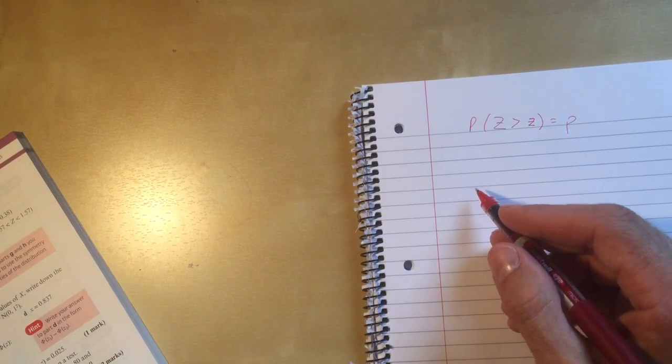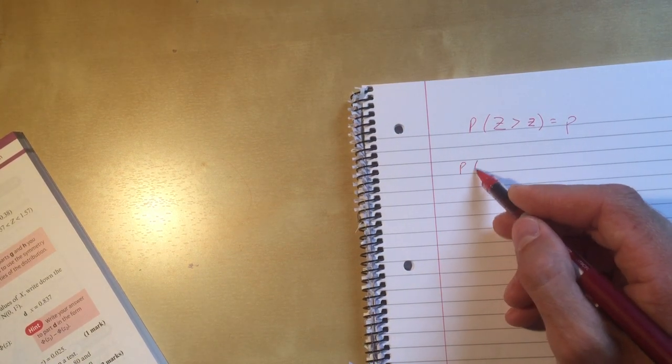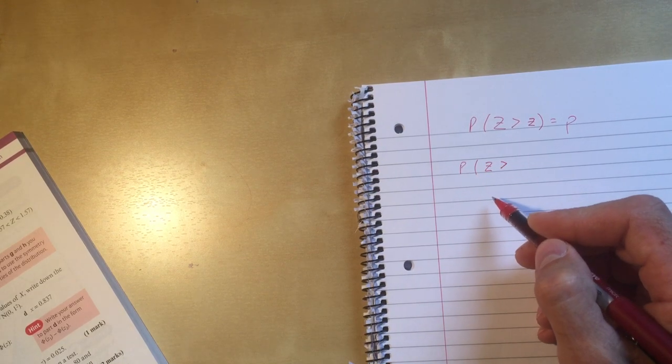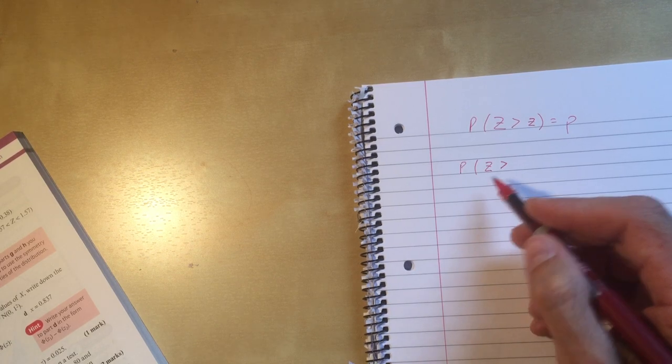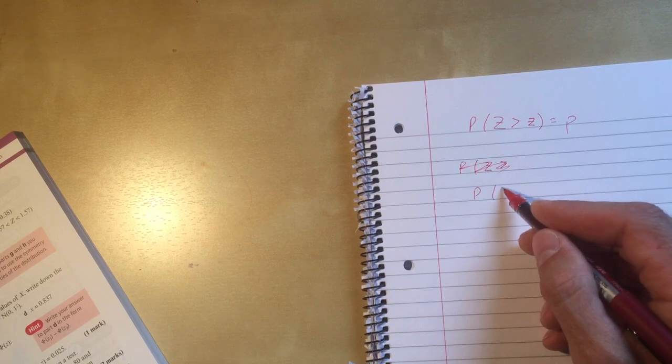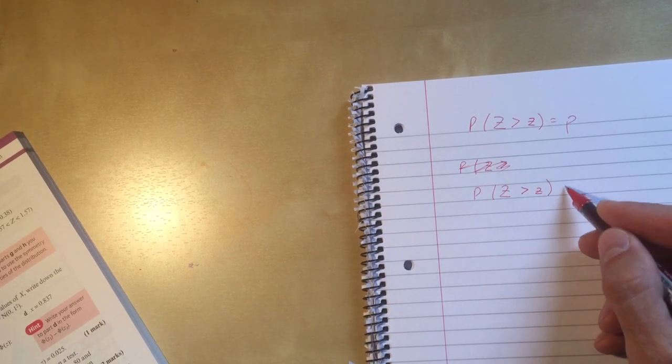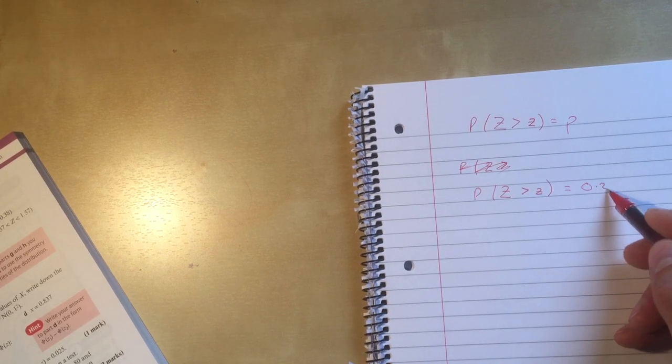So if we're interested in the question, we tend to ask this the other way around. If we're interested in what's this little value of z here so the probability above it is 0.2. So the question we're asking is this here is our z distribution, there is 0, I want the area, what is the z value so the area above it is 0.2.